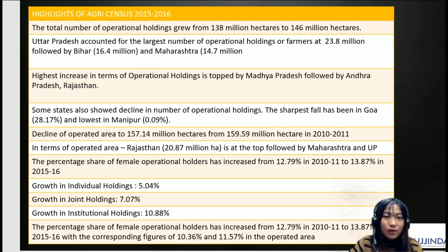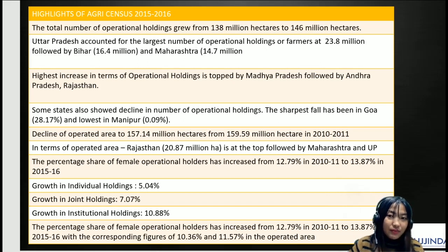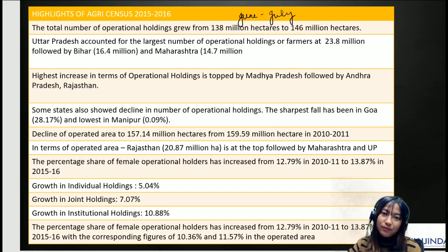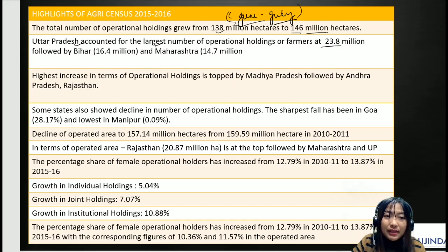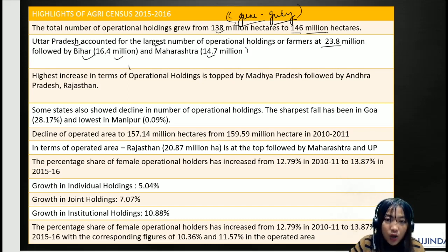First, note that the agriculture year is from June to July, similar to how the financial year is from April to March. The total number of operational holdings grew from 138 million to 146 million. Uttar Pradesh had the largest number of operational holdings at about 23.8 million, followed by Bihar with 16.4 million and Maharashtra with about 14.7 million. The highest increase in operational holdings was topped by Madhya Pradesh, followed by Andhra Pradesh and Rajasthan — these are increases compared to the 2010-2011 census.